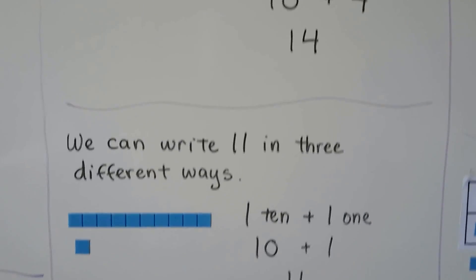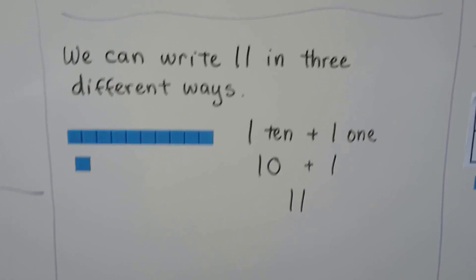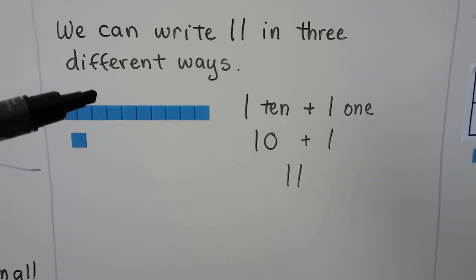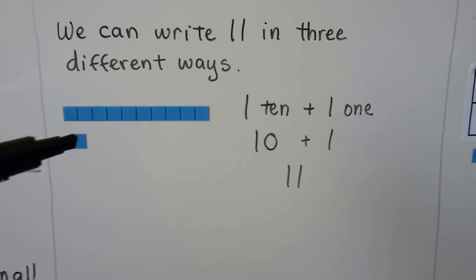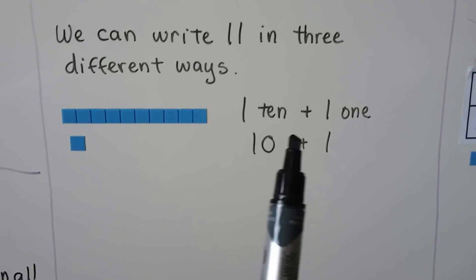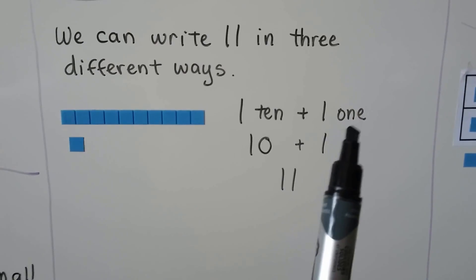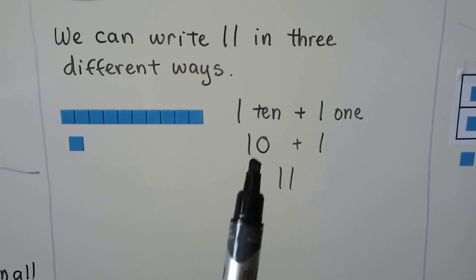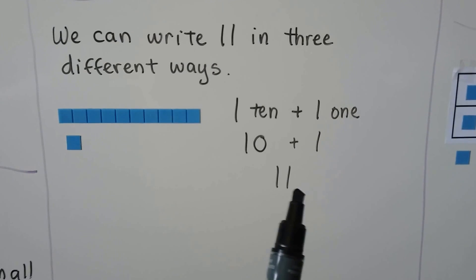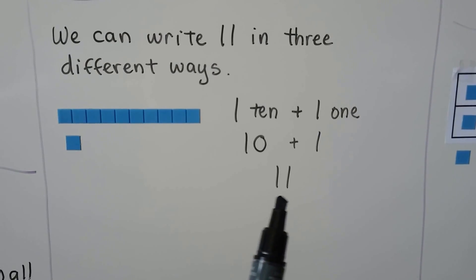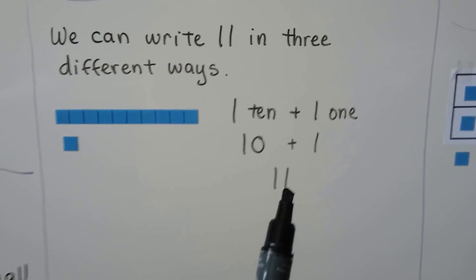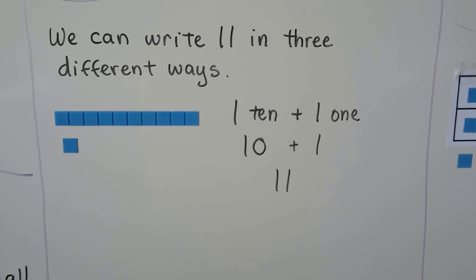We can write 11 in three different ways. Here we have a 10 and a 1. We have 1 ten plus 1 one. It's 10 plus 1. It's 11. There's a 1 in the tens place and a 1 in the ones place.